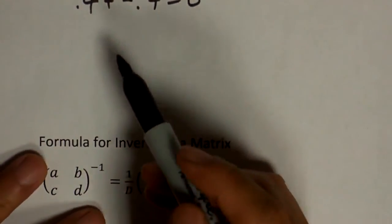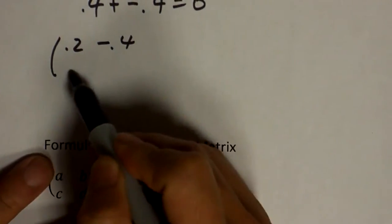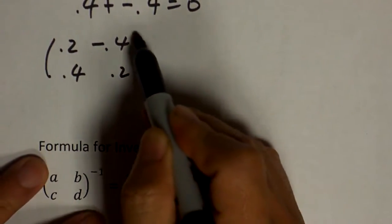And this matrix is the inverse of that matrix. And to write them symbolically, here's how you say it. Point two, negative point four, point four, point two.